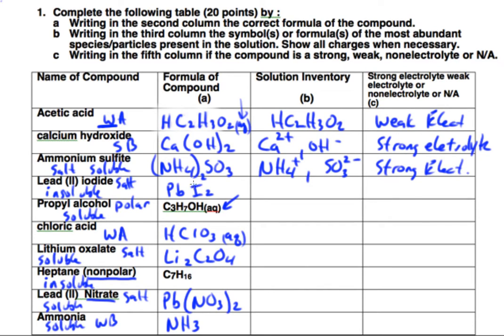Lead 2 iodide is a precipitate. It's insoluble from the solubility rules. So there's no particles dissolved. So this is N/A. It's a precipitate. It would settle down to the bottom of the beaker. There would be no dissolved particles.